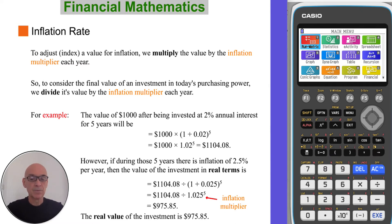For example, $1,000 invested at 2% annual interest for five years will have a final value of $1,104.08, as shown in the calculation here.